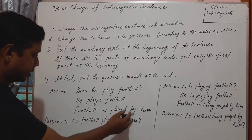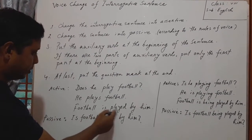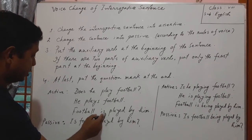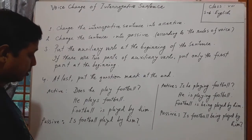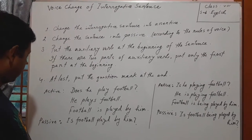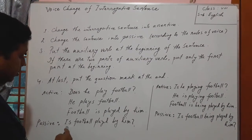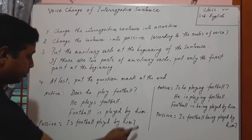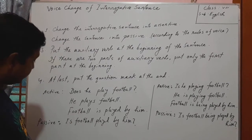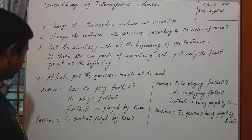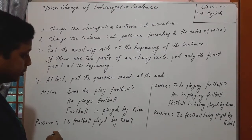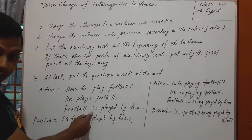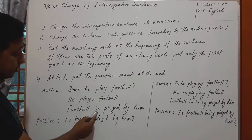In this sentence, there is an auxiliary verb and it is 'is'. We will put this 'is' at the beginning of the sentence. Then the passive interrogative will be: 'Is football played by him?' — with a note of interrogation. In this way, we can change active into passive. You will notice that in this sentence there is only one part of the auxiliary verb.